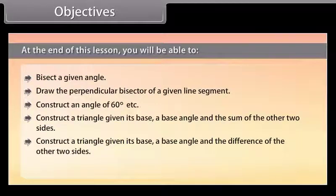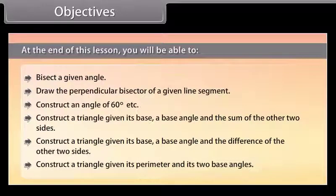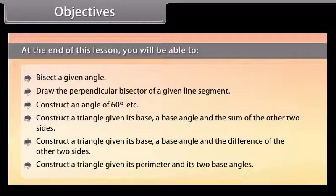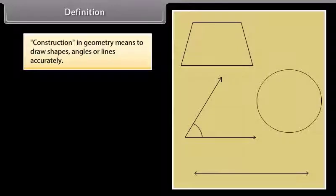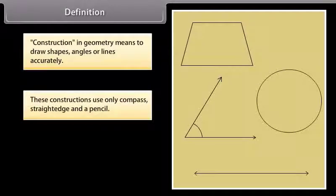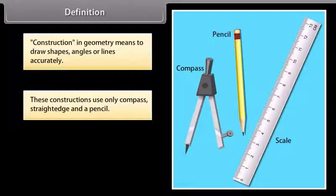Also construct a triangle given its base, a base angle and the difference of the other two sides, and construct a triangle given its perimeter and its two base angles. Definition: construction in geometry means to draw shapes, angles or lines accurately. These constructions use only a compass, straight edge, that is ruler, and a pencil.